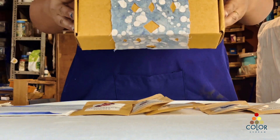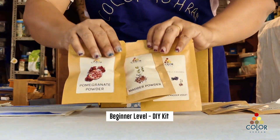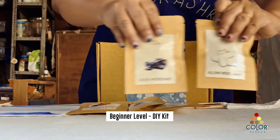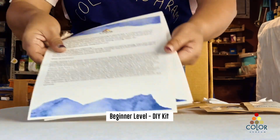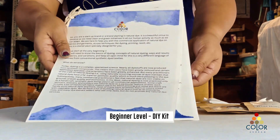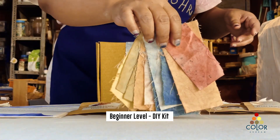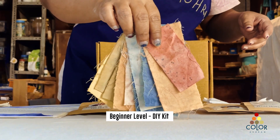Let's come to the beginner level. That's a kit which you receive, which has a dye and a mordant, and it explains what is a dye and a mordant, how do you extract color, how do you dye, and how can you have a dyed piece?